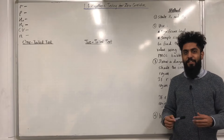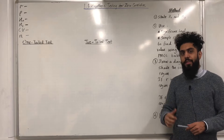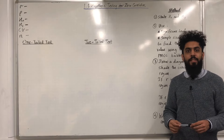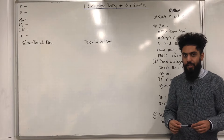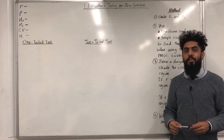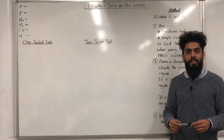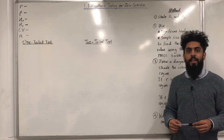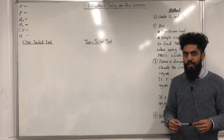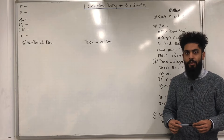Welcome back. In this video I'll be looking at 1.3 hypothesis testing for zero correlation. 1.3 represents chapter 1, section 3 of the Pearson A-level maths, applied maths, year 2 textbook.